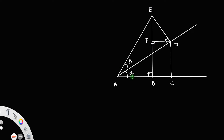If this angle is alpha, this angle will be 90 minus alpha, and this one is also 90 minus alpha. Since these two angles are vertically opposite angles, this will also be 90 minus alpha. Let us call this point O. From the right triangle OFD, since this angle is 90 minus alpha, this angle will be alpha.